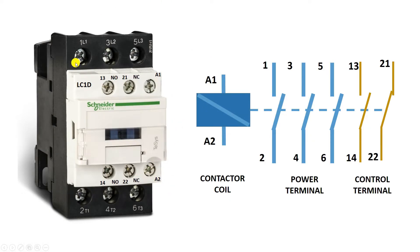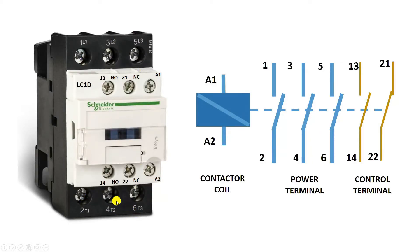After this, in this contactor you will find power terminals. Here is L1, L2, L3 — three terminals — and here T1, T2, T3 — three terminals. So in total you will find six power terminals for power wiring.